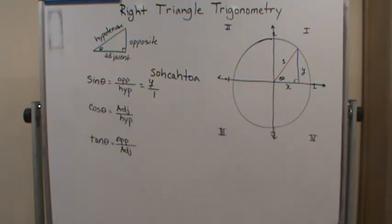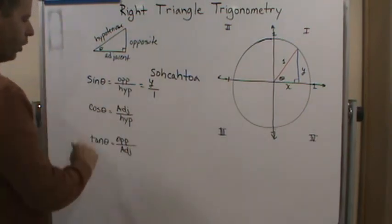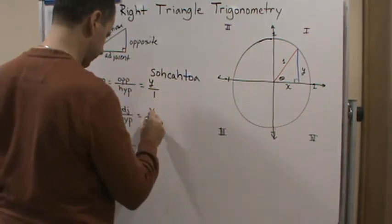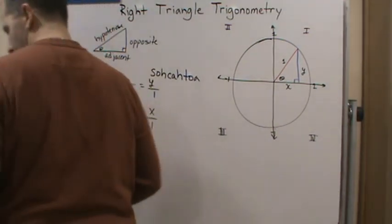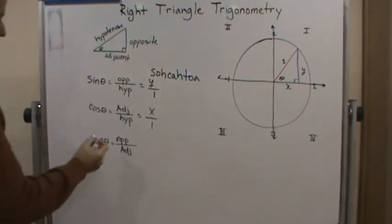Now, what about cosine? Cosine is adjacent over hypotenuse. So, it's going to be x over 1. And then, what about tangent? Tangent is opposite over adjacent. So, that's going to be y over x.